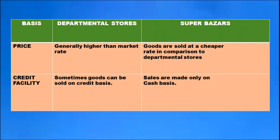Goods are sold only on a cash basis in super bazaars, while in departmental stores goods are sometimes sold on a credit basis as well.